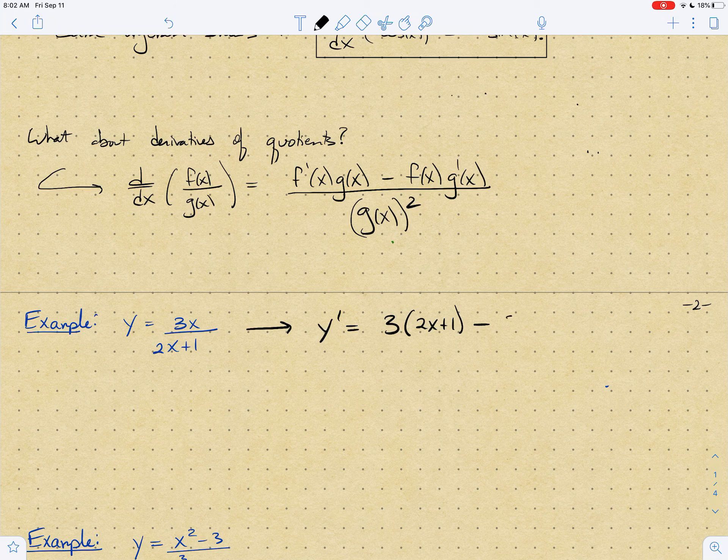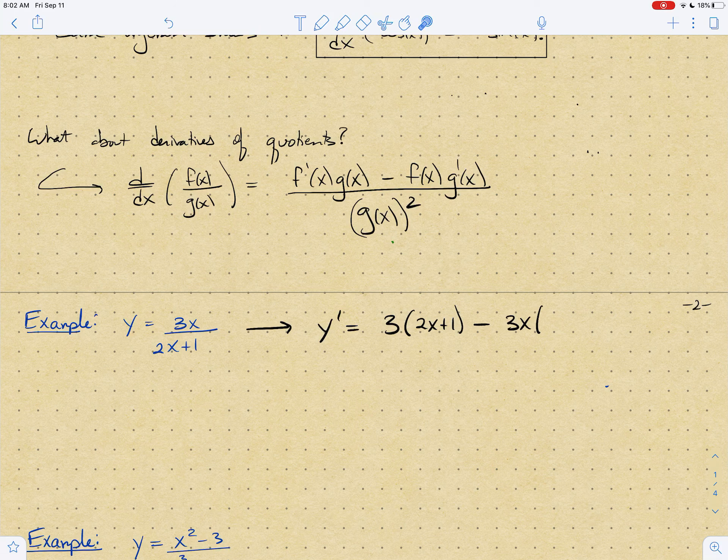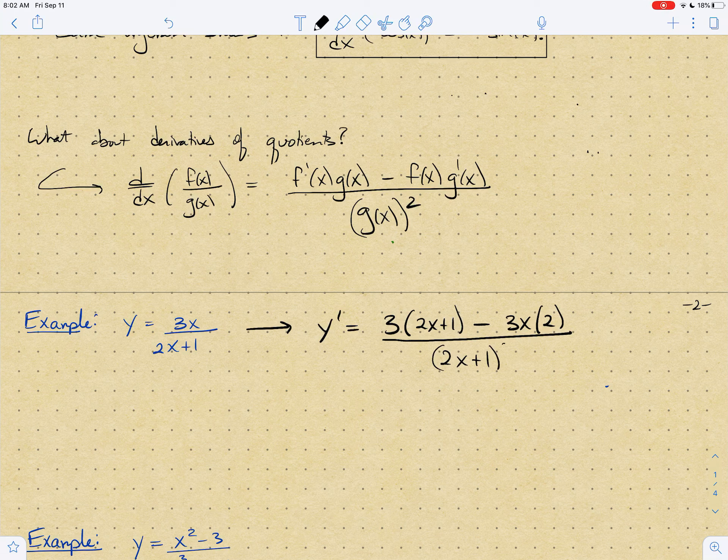And I want to multiply 3x times the derivative of the bottom and I get out a 2. So the derivative of the bottom is 2, and then I'm going to divide by the bottom all squared, so 2x plus 1 all squared.